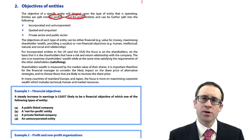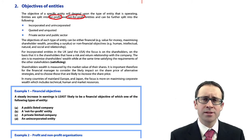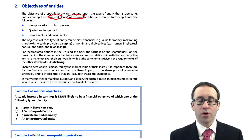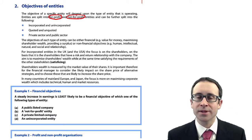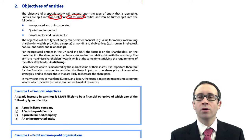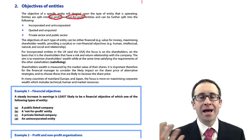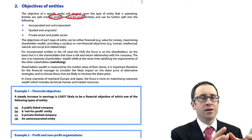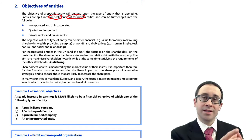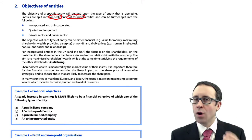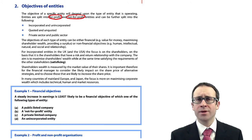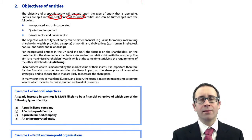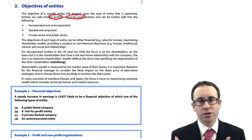We can then think about quoted and unquoted. If you've got an incorporated business, you will either be quoted — whereby your shares are listed on an active exchange — or unquoted, whereby your shares are not listed on an active exchange. If you're quoted, you are much more publicly accountable for your actions. When setting your financial and non-financial objectives, you need to be very cautious, because you will be assessed against those objectives. If you don't meet them, that could have a direct impact on your share price. For an unquoted company, you're not as publicly accountable, because you're not listed on a stock exchange.